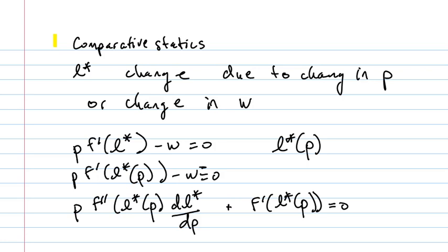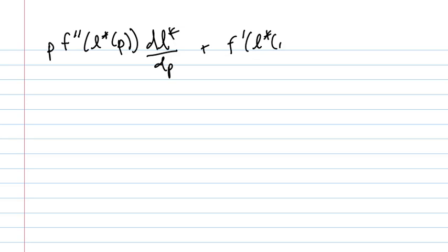We can then solve for dL star dP. Let me actually do that in the next screen. I'm going to copy over this equation. We had P F double prime of L star of P dL star dP plus F prime of L star of P equals zero. That's what we had.